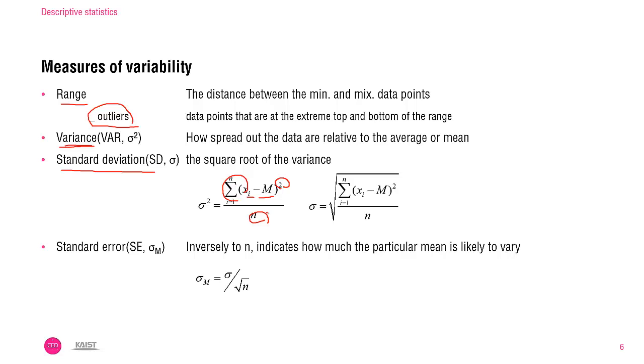Once you know the variance, you can easily calculate the standard deviation, which is the most commonly used measure of variability. The standard deviation is simply the square root of the variance. Interpreting the standard deviation is easier than interpreting the variance because the unit of the standard deviation is the same as the original data.